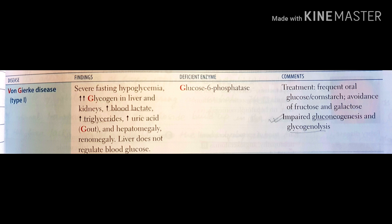Glycogen will get stored in the liver and kidney, will not get mobilized, and there will be hepatorenomegaly. Along with that, a few things get increased that you can remember: lactate, uric acid, and triglyceride. The increased uric acid will eventually lead to gout.